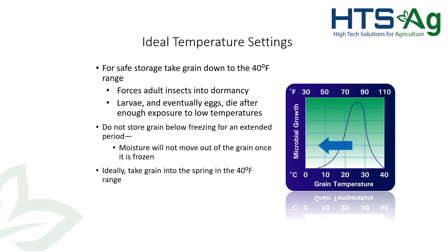Temperature of the grain is one of the most important things. Moisture is what we all pay attention to, but temperature is something we really need to manage as well. For safe storage, we want to take grain down to 40 degrees — at that temperature, adult insects go into dormancy, and larvae and eggs will eventually die after enough exposure. We do not suggest storing grain below freezing for extended periods: if you freeze the corn, moisture won't move out of the grain; and when it warms back up, it's going to sweat, giving a false high moisture reading when hauling to town. We also risk cracking kernels that are very wet, causing degraded grain condition.